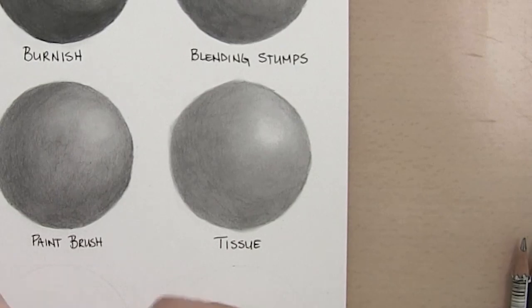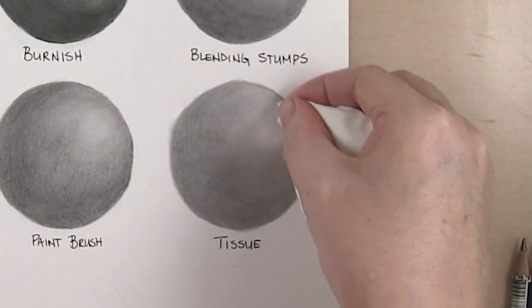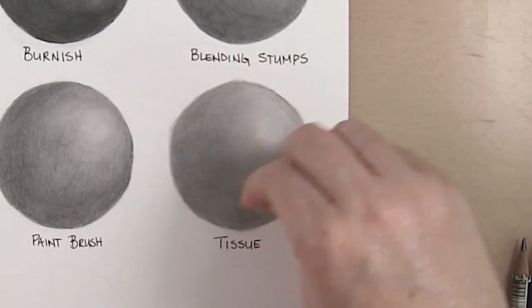It is difficult to use in small areas and keep a very crisp edge. You also more than likely need a few layers to build up value as this does remove quite a bit of graphite.